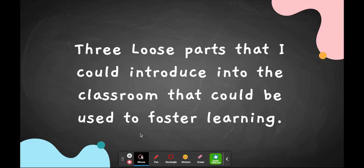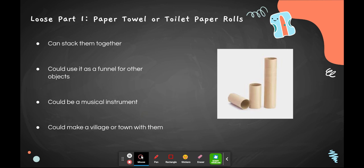Three loose parts that I could introduce into the classroom to foster learning are paper towel or toilet paper rolls. These can allow children to stack them, use them as a funnel for other objects to go through, use them as a musical instrument, or make a village or town by taping them together or making objects go through, creating a little town with each different size of paper towel or toilet paper roll.